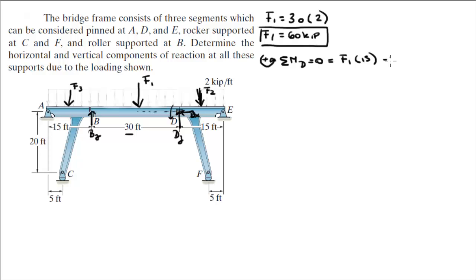Minus BY times 30 feet, which is turning this lever arm clockwise, so it's negative. But you already find F1 on the previous step, just plug it in, solve for BY and you're going to get that BY is equal to 30 kip.